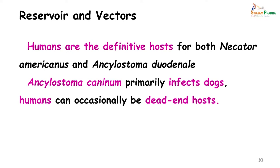Regarding reservoirs and vectors: for hookworm, man is the definitive host. The larva exists in the soil and also in the human host on its travels to the small intestine. However, the main form found in humans — the one which actually causes damage — is the adult worm. Ankylostoma caninum is the hookworm of dogs; very rarely it may infect humans, who then become a dead-end host because the larva cannot spread further in the human body.